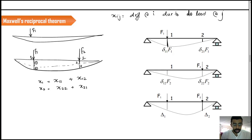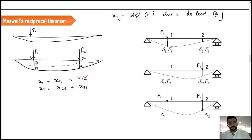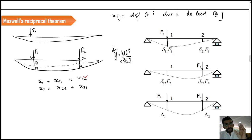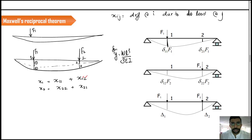X11 means deflection at 1 due to a load at 1, and X12 means deflection at 1 due to a load at 2. So X1 has two parts: X11, which is the deflection at 1 due to load F1, and X12, which is deflection at 1 due to load F2. We have learned different equations; for example, for a cantilever with an end load, we derived Y = WL³ / 3EI. The method we followed can be used to derive deflection at any location, though as the load or location changes, the equation may become complex.